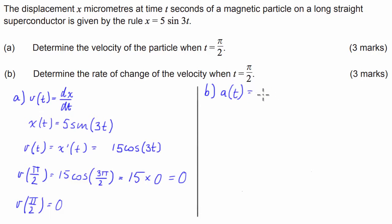which is equal to dv dt, which in this case we've got v of t is equal to 15 times the cosine of 3t. So v dash of t is going to be equal to, so the derivative of cos is negative sine.